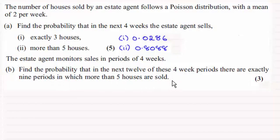We worked out in the previous part, part 2, the probability that more than 5 houses were sold in a 4 week period was 0.8088. If you're unsure of this, do go back and check out my video on that solution.